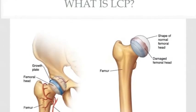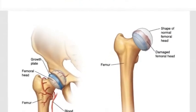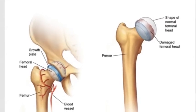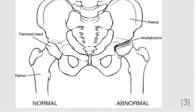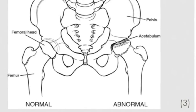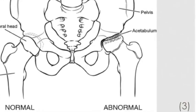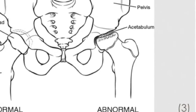As bone death occurs, the head of the femur develops a fracture of the supporting bone. This fracture signals the beginning of bone reabsorption by the body. As bone is slowly absorbed, it is replaced by new bone and tissue. The femoral head is less strong after the bone dies and can become flattened due to weight and pressure placed on the bone during normal physical activity.